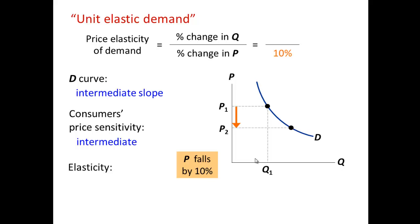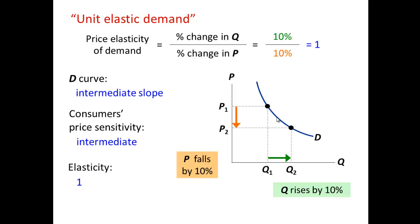The third classification is unit elasticity. In this instance, quantity moves with price. For every change in price, we see a proportional unit change in quantity — they are the same. As you can see, the change in quantity equals the change in price, giving us one, which is unit elastic. We are moving from a steep demand curve to one that is now getting flatter.